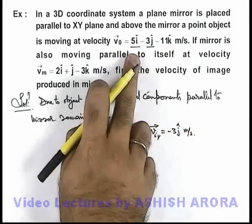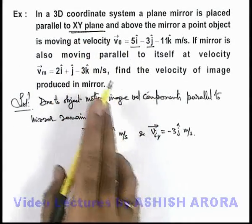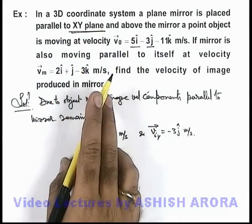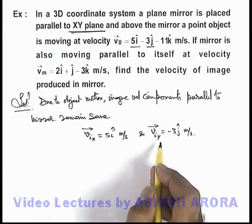As that of object velocity, because the mirror is placed parallel to XY plane. So in XY plane, object velocity components will be as it is retained in the image velocity components.